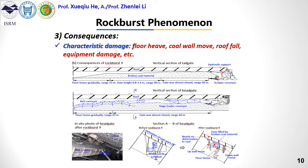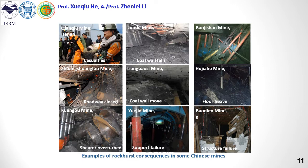As the figures show, the characteristic damage caused by rock bursts normally includes floor heave, roof fall, coal wall movement, and damage to equipment such as the belt conveyor and hydraulic supports. These figures show different damage forms caused by rock bursts, and it can be seen that the consequences are really disastrous.